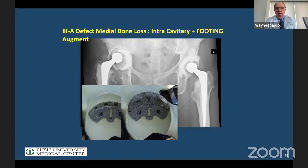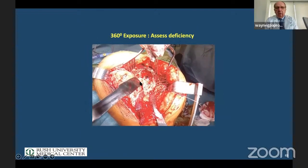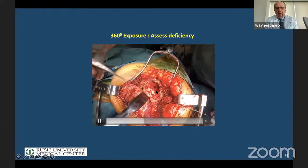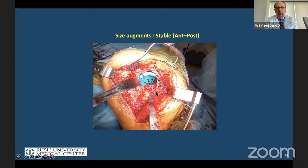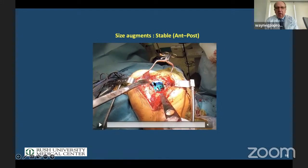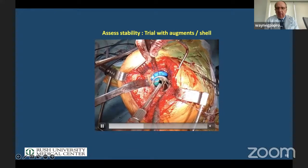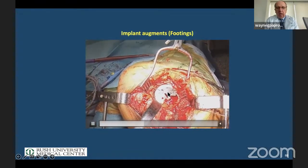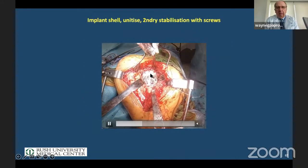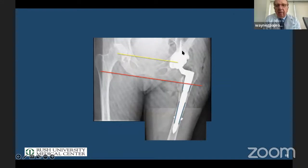This transition case requires a footing augment as well as an intracavitary superior augment. With these larger medial defects — you can see the oblong defect and the hole medially — we put an augment that functions as a footing, then another augment because we were still too much uncovered. We put trial augments in first to make sure everything fits, then unitize with cement on the real augments, and place the cup. You can see the footing, then one augment here, and another augment outside.